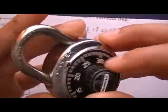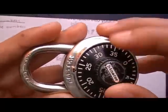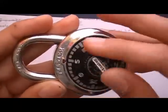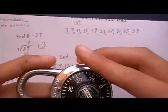So in order to work a master lock, what you have to do, first you have to clear it. So you turn it multiple times clockwise, then you land on your first number, 39, or 3, sorry.